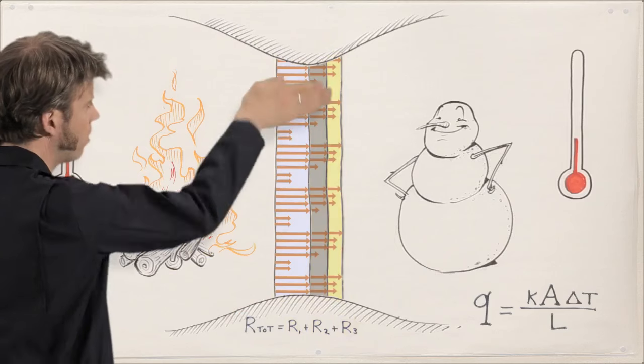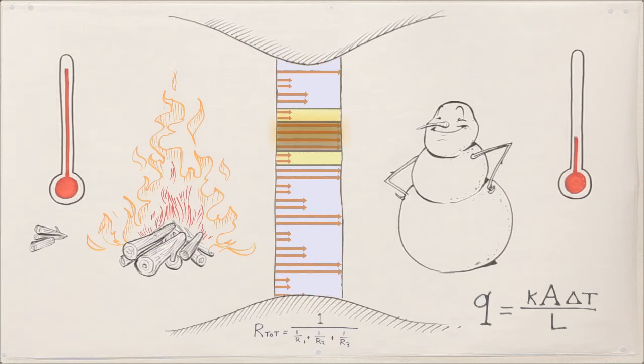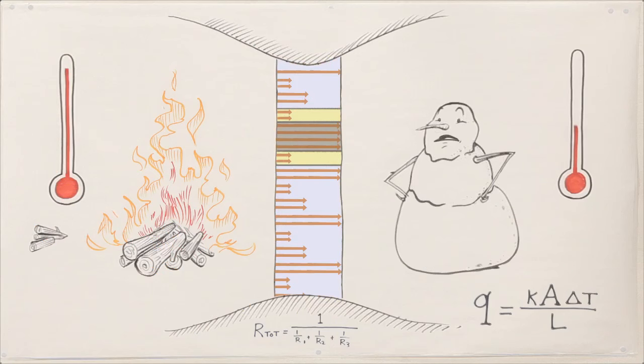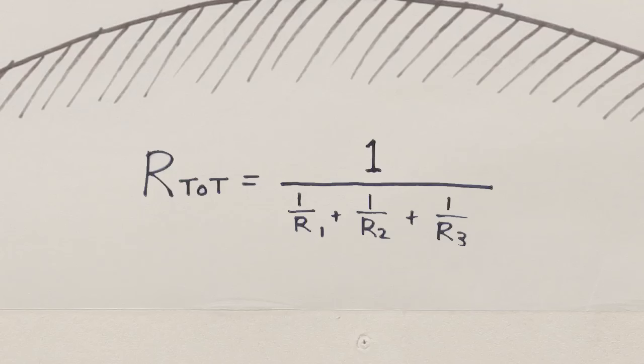But if the materials are in parallel, one with low resistance can conduct heat right around high resistance materials. These resistances add as 1 over the sum of the reciprocals.